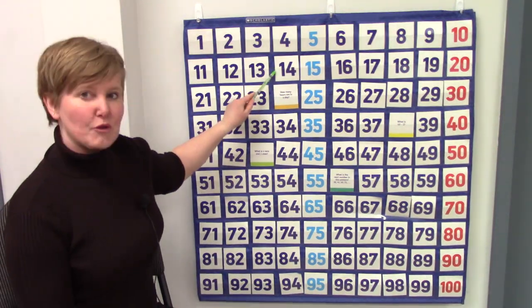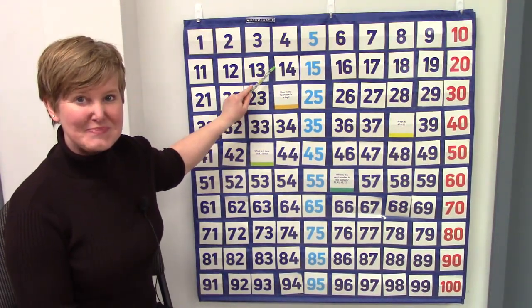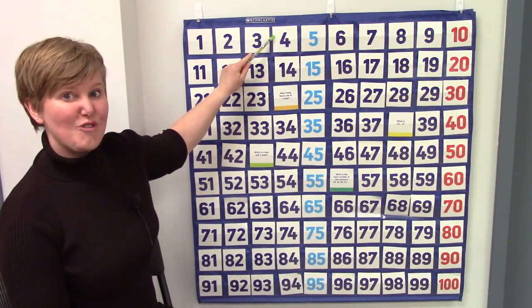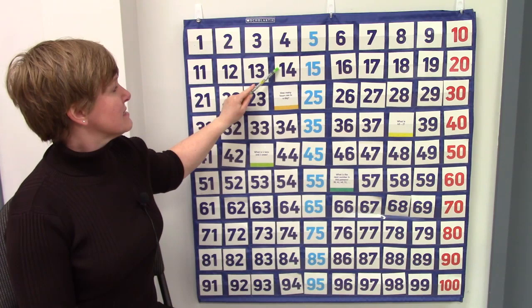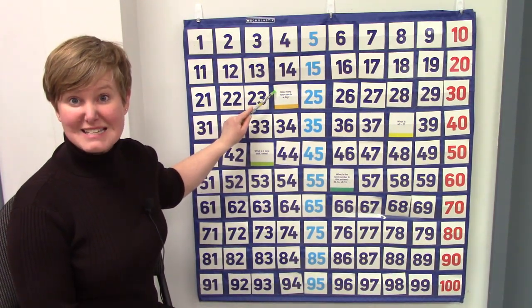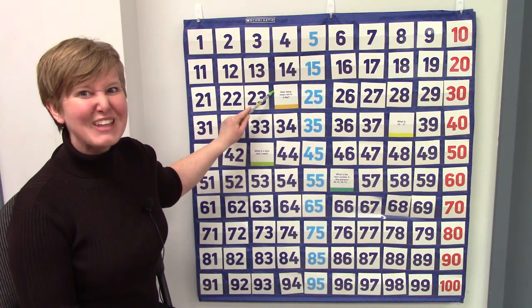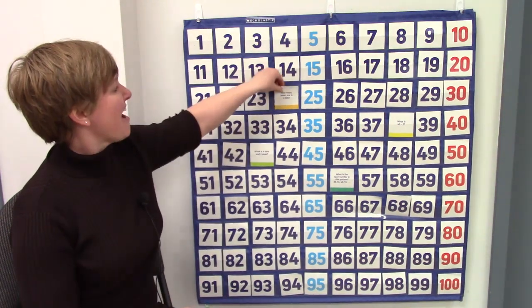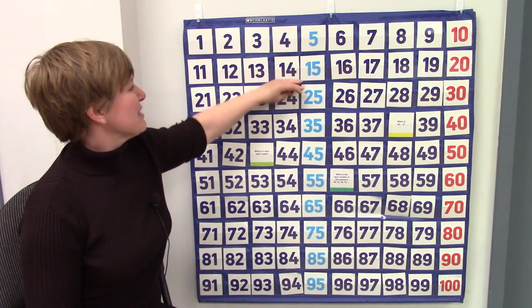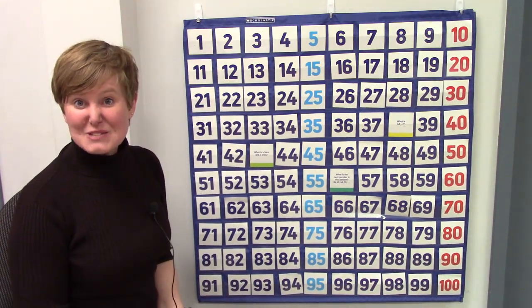Here I have the number 14. We know that 10 less than 14 is 4. What would 10 more than 14 be, or 14 plus 10? You're right. It would be 24. 24 is 10 plus 14.